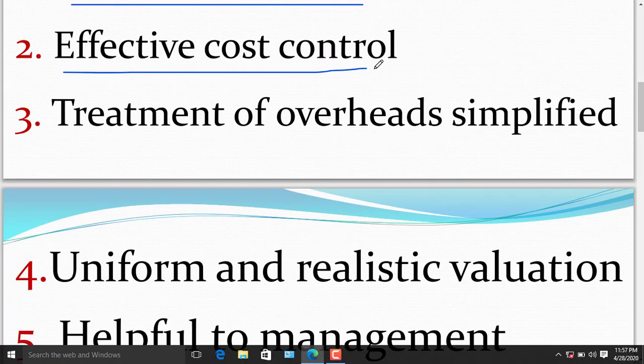The second benefit of marginal cost is effective cost control. Marginal cost divides cost into fixed and variable. Fixed cost is excluded from product, as such, management can control marginal cost effectively.